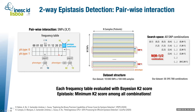Once we have the counts for each genotype combination, we have the frequency table. We then apply an objective function — in this study, the Bayesian K2 score — which squashes all those numbers into a single value. The minimum score across all combinations is used to identify which SNP pair likely contributes to the disease.